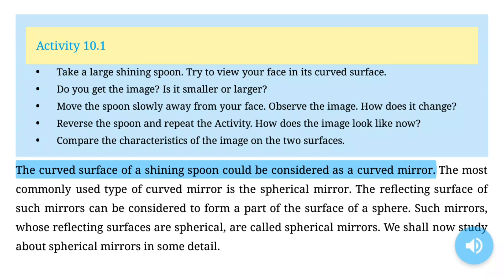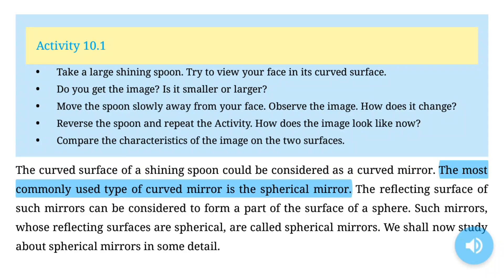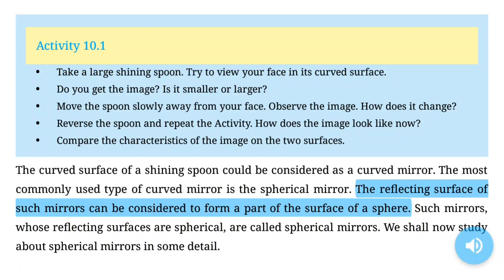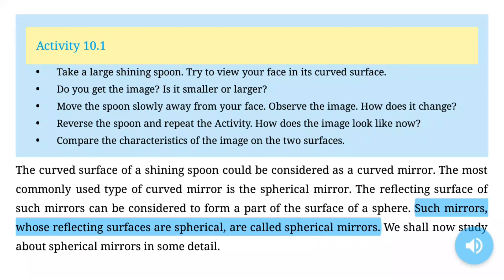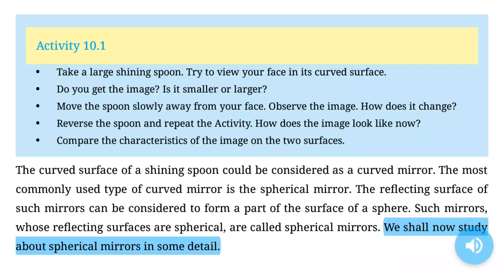The curved surface of a shining spoon could be considered as a curved mirror. The most commonly used type of curved mirror is the spherical mirror. The reflecting surface of such mirrors can be considered to form a part of the surface of a sphere. Such mirrors, whose reflecting surfaces are spherical, are called spherical mirrors. We shall now study about spherical mirrors in some detail.